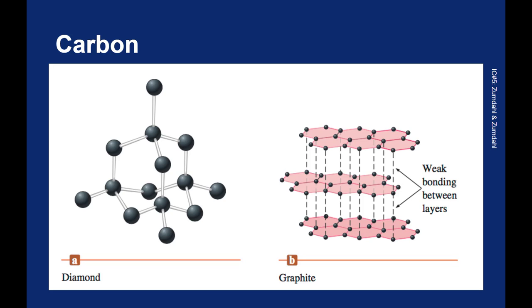Graphite is pure carbon as well, but the hybridization of the carbon is sp2, meaning that each individual carbon makes a trigonal planar shape. And the carbons bond together to make these hexagonal sheets. Kind of looks like a honeycomb.